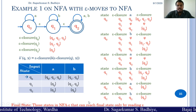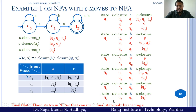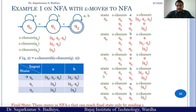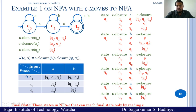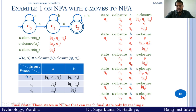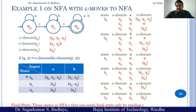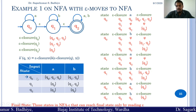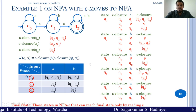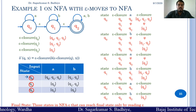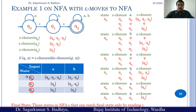The final states of the equivalent NFA are those states from which the final state can be reached by reading epsilon only. From q0, by reading epsilon you can reach q2, which is the final state; q1 can also reach q2 by reading epsilon only. So all three states q0, q1, and q2 will be final states in the equivalent NFA. In the next class we will look at another example on NFA to DFA conversion. Thank you.